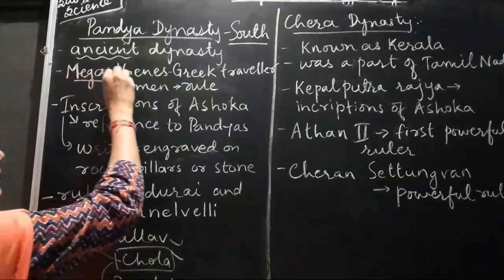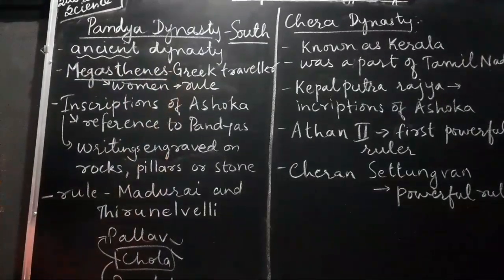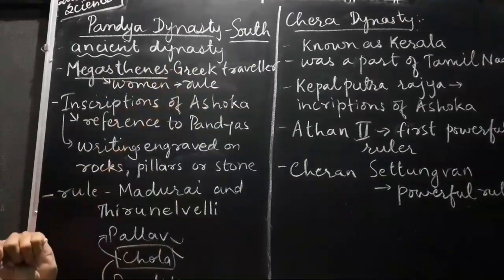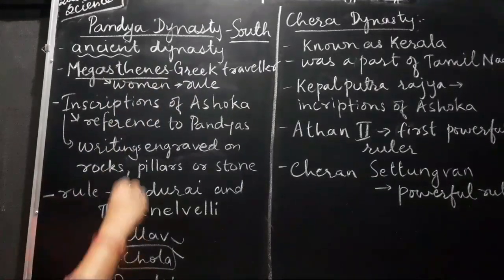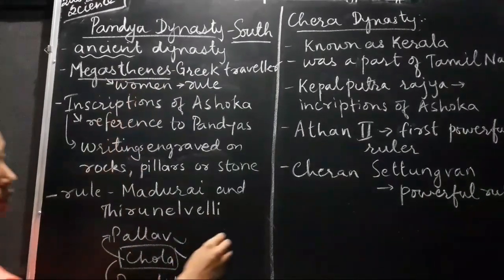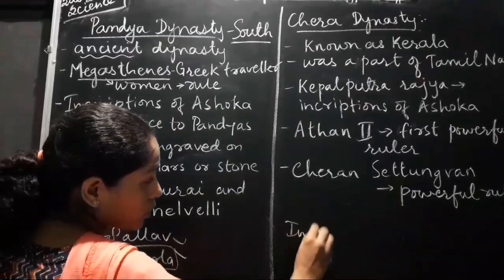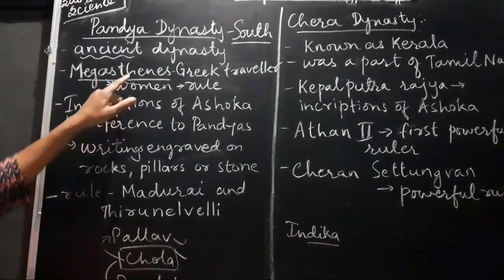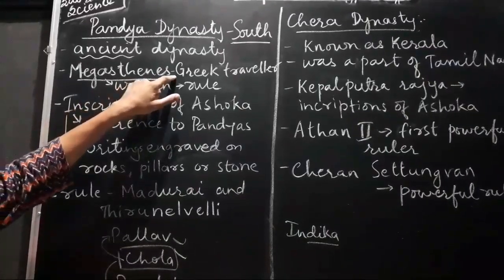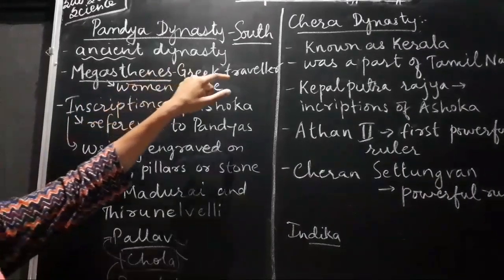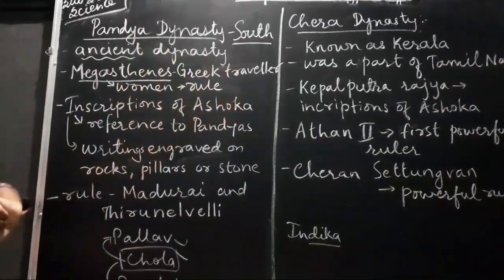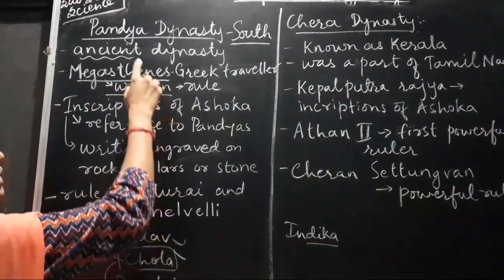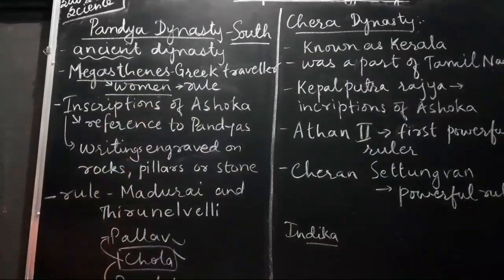There was a Greek traveler who came to India from Greece and he noted in his book — the name of the book which he wrote was named as Indica. He traveled in India during the time of Chandragupta Maurya, and he noted that during the time of the Pandya dynasty, women used to rule in this dynasty.